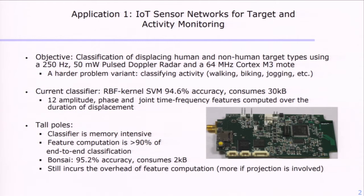Our features are such that we need a substantial length of the cut to be processed in order to generate them, because they are statistics built on time. Therefore, 90% or more of the full classification cycle is consumed by feature computation. These are essentially the two tall poles, and we were motivated to try out feature learning techniques instead of feature engineering techniques to see if we can mitigate them.